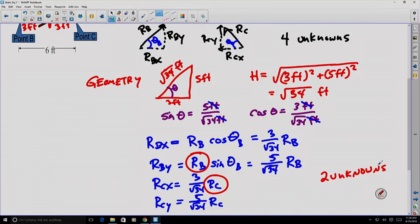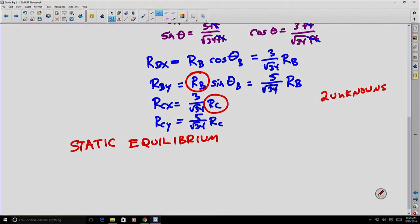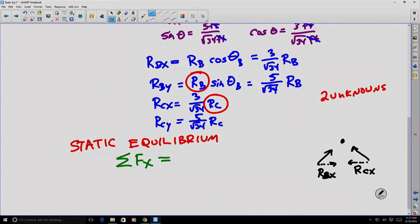Now that we've applied geometry, let's apply static equilibrium. Our first equation says the sum of forces in the X direction has to equal zero. Looking at point A, we have RBx pushing on it in the X direction from the B point, and on our right side we have RCx pushing in the other direction. So RBx in a positive direction minus RCx in a negative direction equals zero.